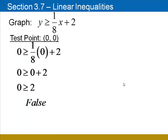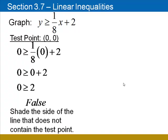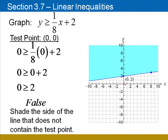When we substitute 0 for x and 0 for y, we're left with the inequality 0 is greater than or equal to 2, which is false. So instead of shading the side that contains the origin, we're going to shade the other side of this line. Not where the test point was, but on the other side of the line.